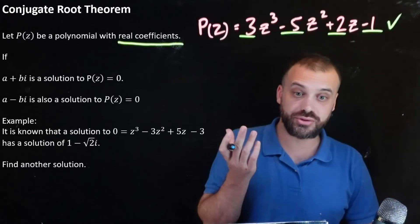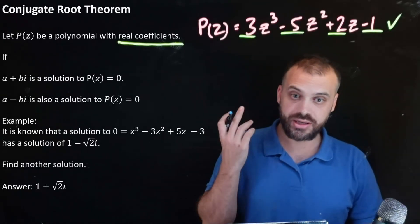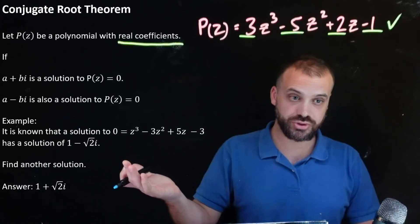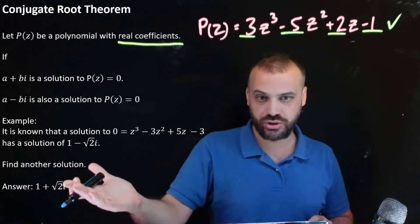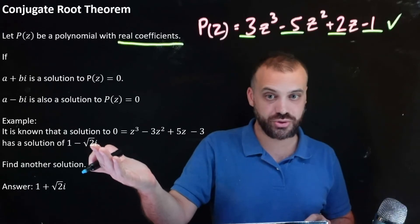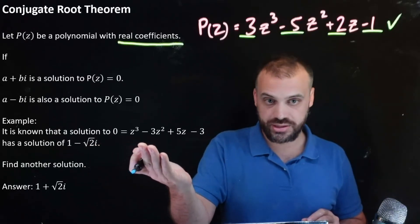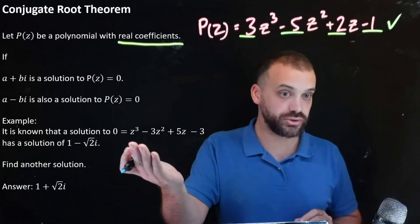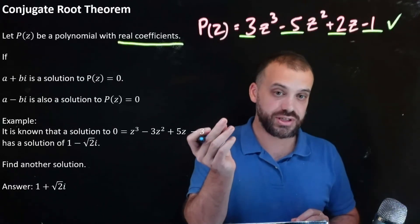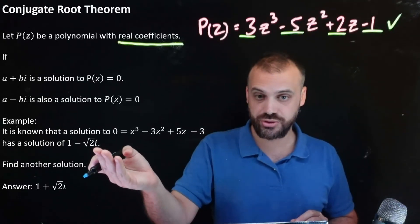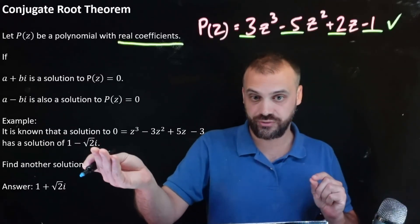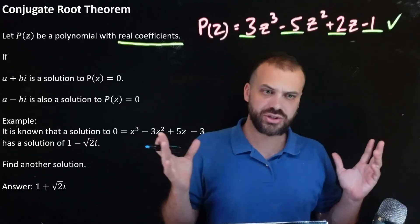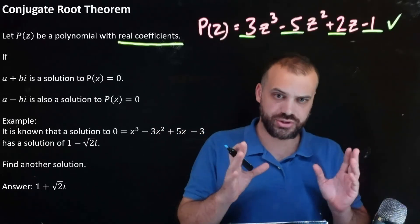So what is the other solution? It is 1 + √2i. Why is it 1 + √2i? Because that's the conjugate of 1 - √2i, and this is a polynomial with real coefficients. So if it has one complex root, it will have another complex root that is the conjugate of that one. That's the conjugate root theorem. That's all there is to it.